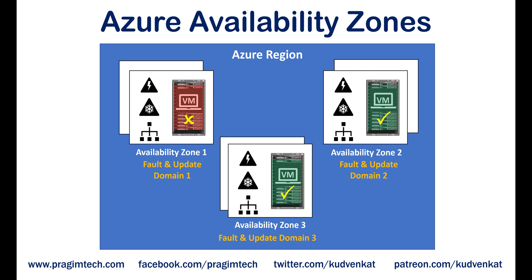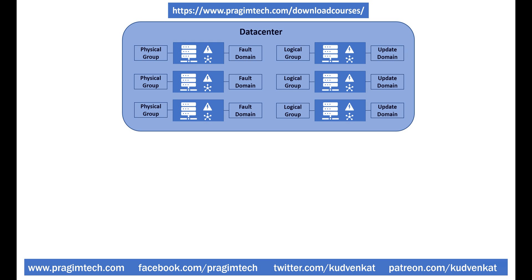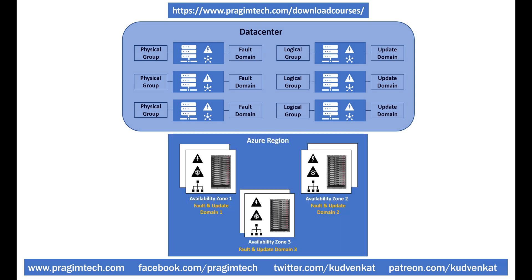Here's the important bit to keep in mind. The concept of update domain and fault domain is present in both availability set and availability zone. In case of an availability set, a rack of servers is a fault domain and a logical group of servers is an update domain. In case of an availability zone, each availability zone itself is considered a separate fault domain and update domain. So in a given Azure region, if you have three availability zones, then it's like you have three fault domains and three update domains.